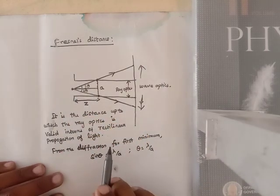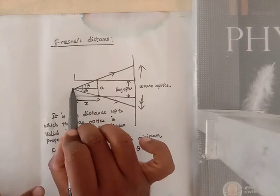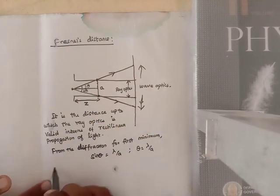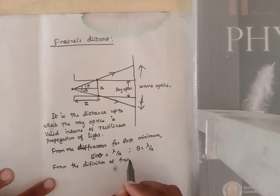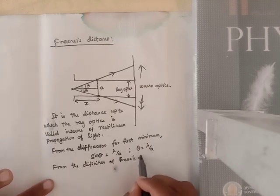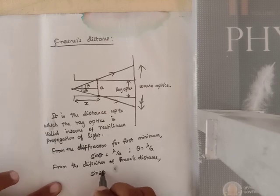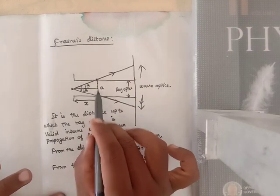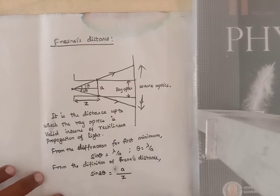From the definition of frontal distance, it is the distance up to which ray optics is valid in terms of rectilinear propagation of light. From the source up to this point it is valid, and the distance is A with angle 2 theta. So sin 2 theta equals the opposite side A divided by the hypotenuse Z, giving sin 2 theta equal to A divided by Z.